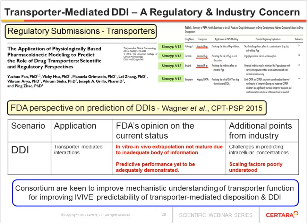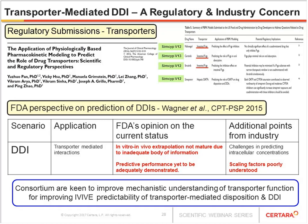In light of these findings, the consortium was keen to improve mechanistic understanding of transporter function for improving IV-IVE predictability for transporter-mediated disposition and DDI. I will talk about the expansion of the ADAM and MADAM models to include additional transporters, provide algorithms and concepts to scale transporter functionality via absolute abundances, and give a brief appraisal of the intestinal transporter absolute and relative expression analysis.